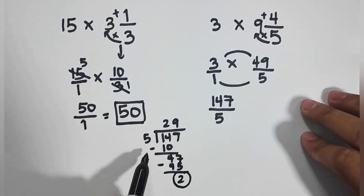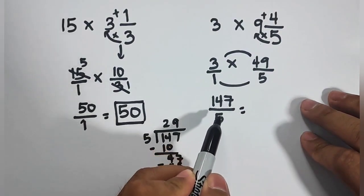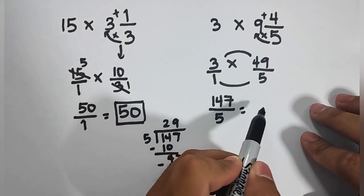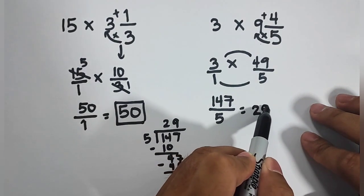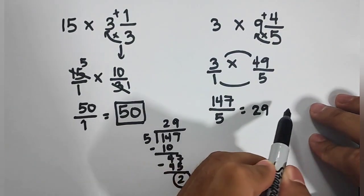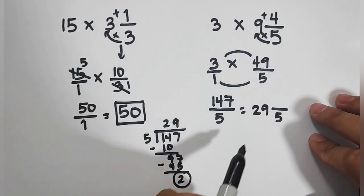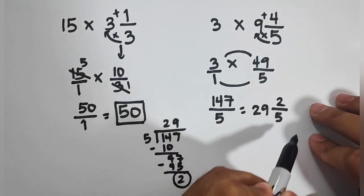So what we have now is that this 147 divided by 5 is the same as, this will be your whole number, which is 29. Copy your original denominator, which is 5. And this is our new numerator, which is equal to 2. Therefore,